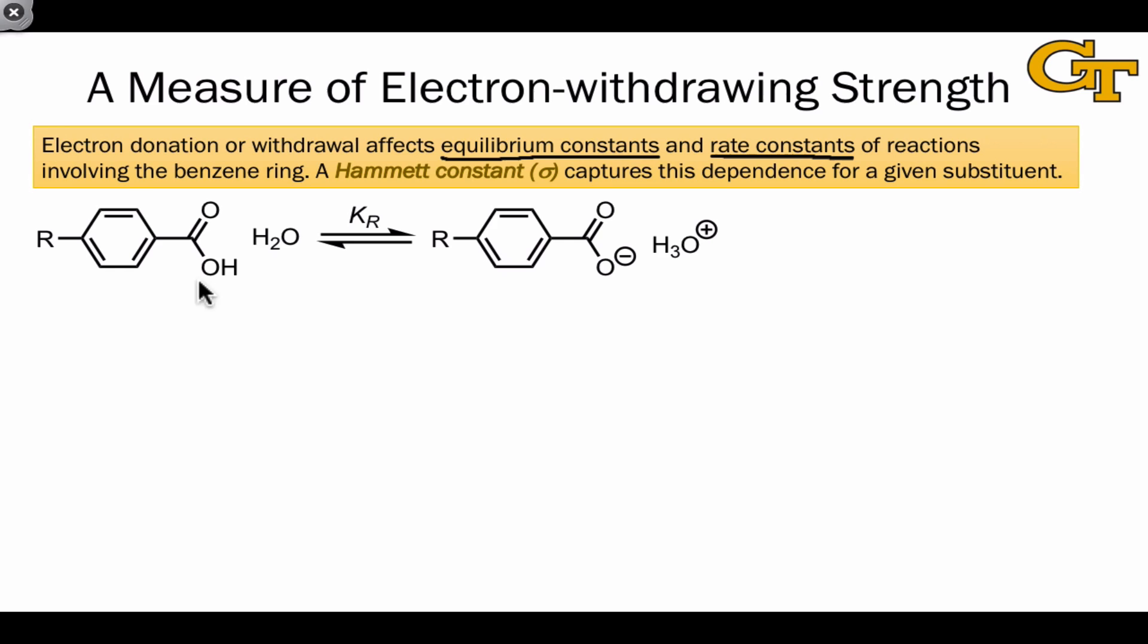This is simply a proton transfer reaction where the proton associated with the carboxylic acid functional group is transferred to water, generating a carboxylate anion and H3O+. This has an equilibrium constant which we're going to call K sub R.